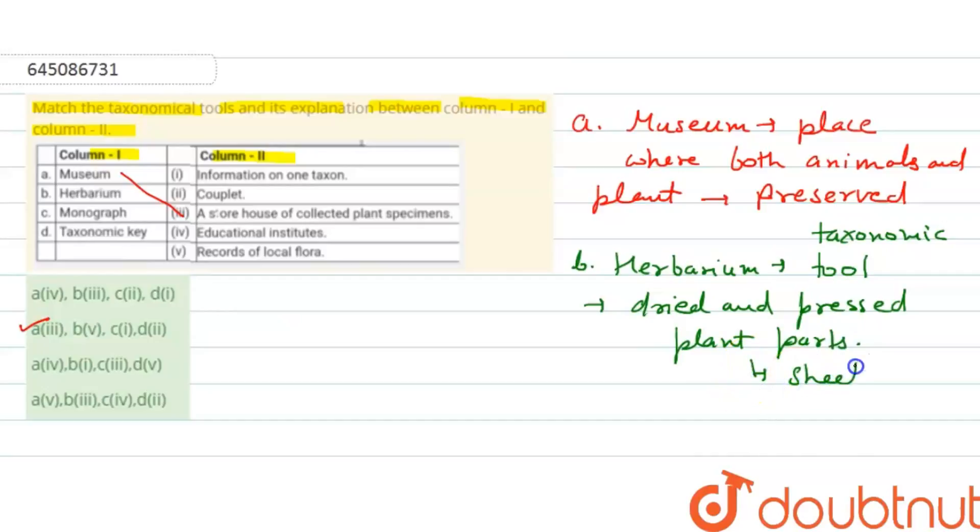It gives the information of common name and botanical name of the plant and the classification also. So herbarium matches with the fifth option, that is records of local flora.